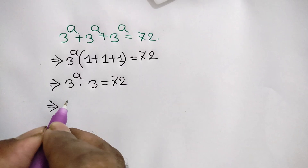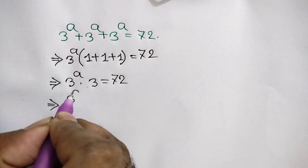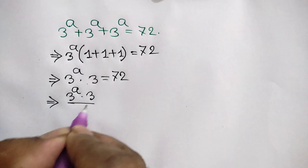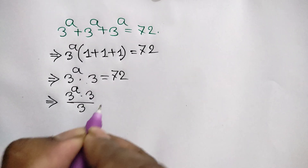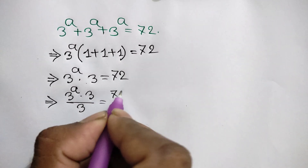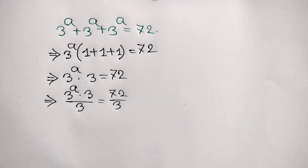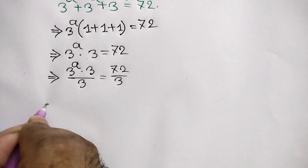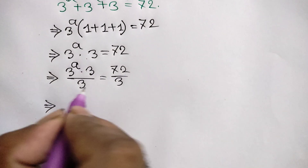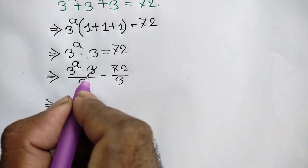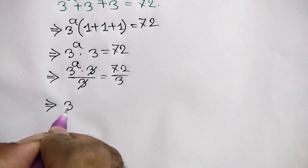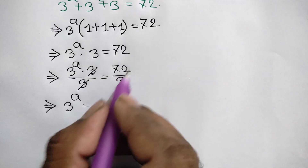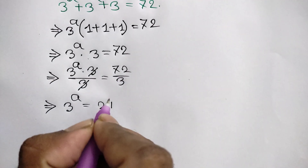Now dividing both sides by 3, we can write 3 to the power a times 3 over 3 is equal to 72 over 3. This 3 cancels with this 3, so we get 3 to the power a is equal to 24.